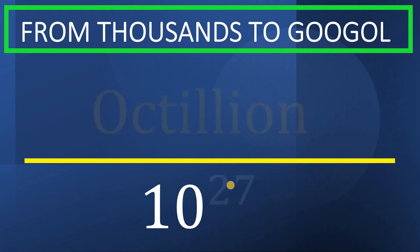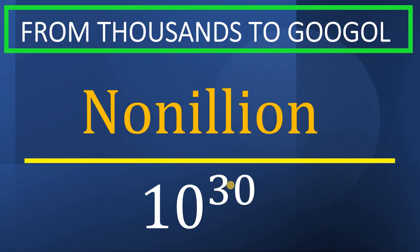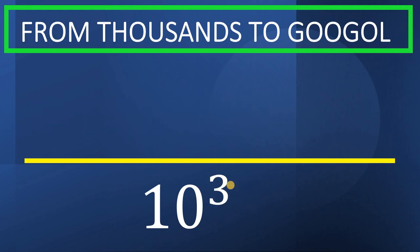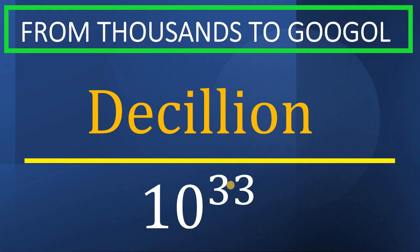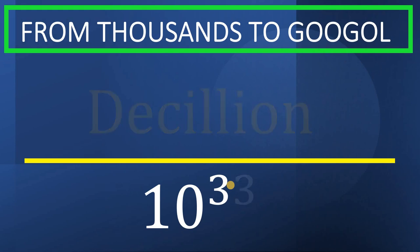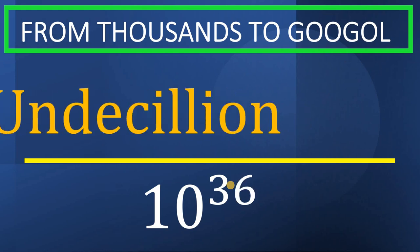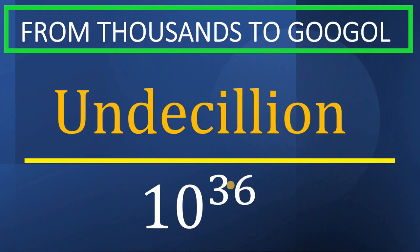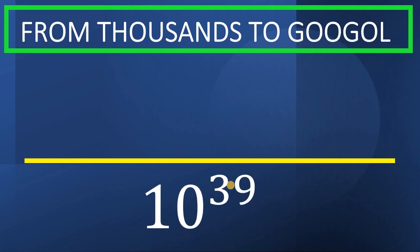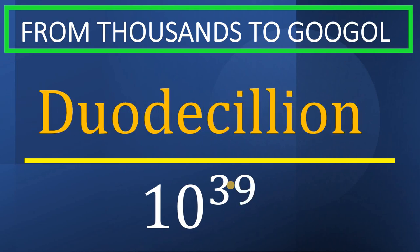10 raised to 27, this is called octillion. 10 raised to 30, this is called nonillion. 10 raised to 33, decillion. 10 raised to 36, it is called undecillion. 10 raised to 39, it is called duodecillion.